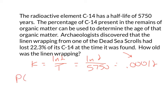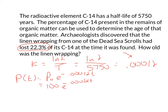Now I'll plug it into the formula: P(t) equals P-sub-zero times e to the negative 0.00012·t. I'm looking for time. I know 22.3% was lost, which means 77.7% is what's left. If I started with 100, I'm ending up with 77.7 out of that 100.